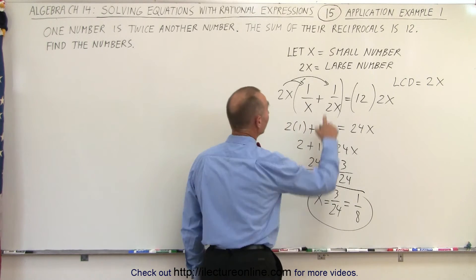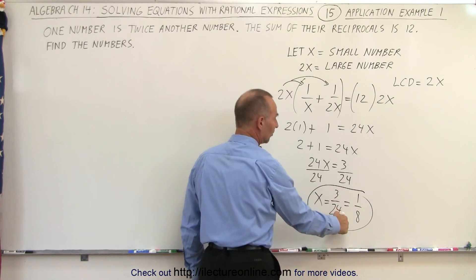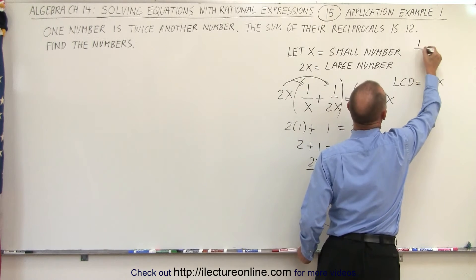So now, since x represents the small number, the small number is then indeed equal to 1 over 8.